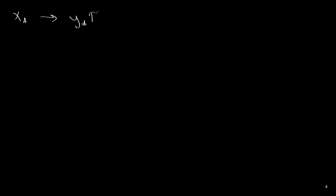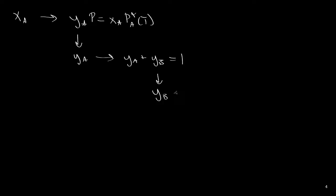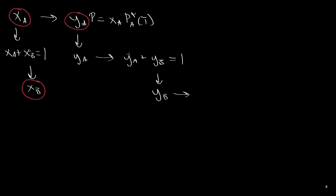With knowledge of xa, we substitute into Raoult's law: ya·P = xa·Pa*(T), and solve for ya. With ya known, we use ya + yb = 1 to solve for yb. Similarly, using xa + xb = 1 we solve for xb. At this point we have solved for xa, xb, ya, and yb.